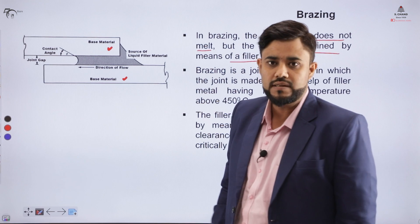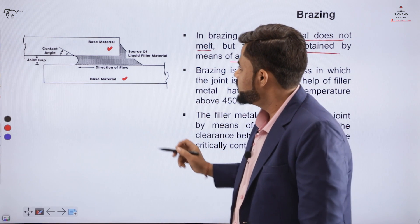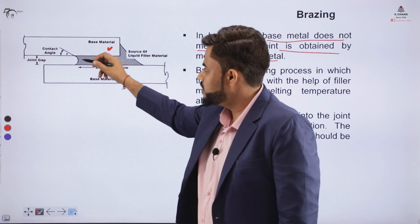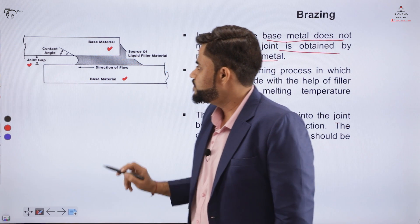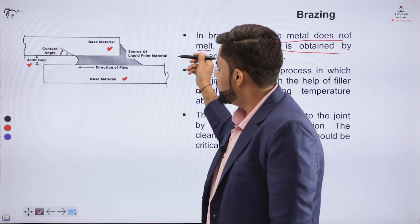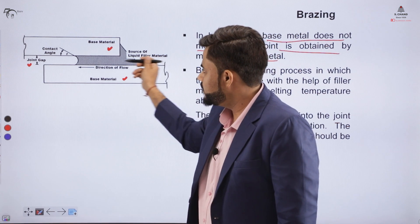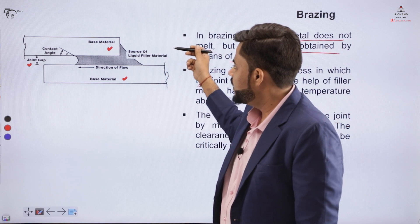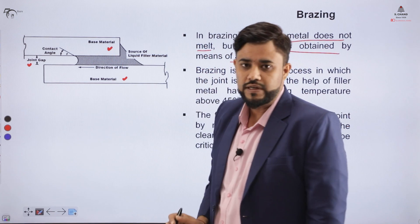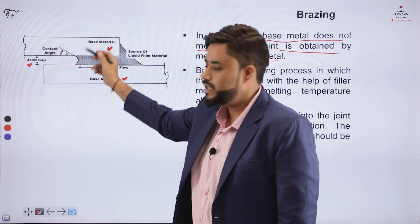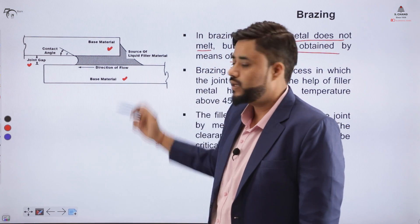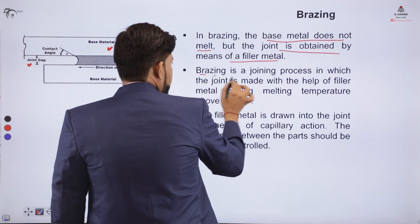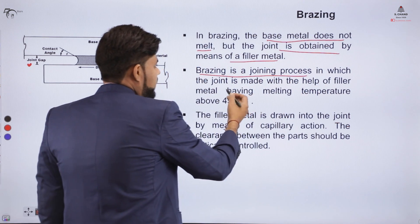As you can see in the diagram, we have two materials to join — these are called the base material. We heat the base material and provide a suitable gap between the two. The liquid filler material flows into that gap because of capillary action, and ultimately a joint is created — called the brazed joint.